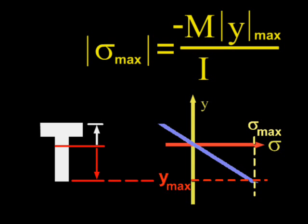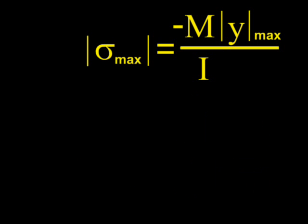In the T-beam shown here, ymax is the distance to the bottom fiber. We have added absolute value signs because we are concerned with magnitude only. We call the absolute value of ymax, C, and substitute it into the equation.